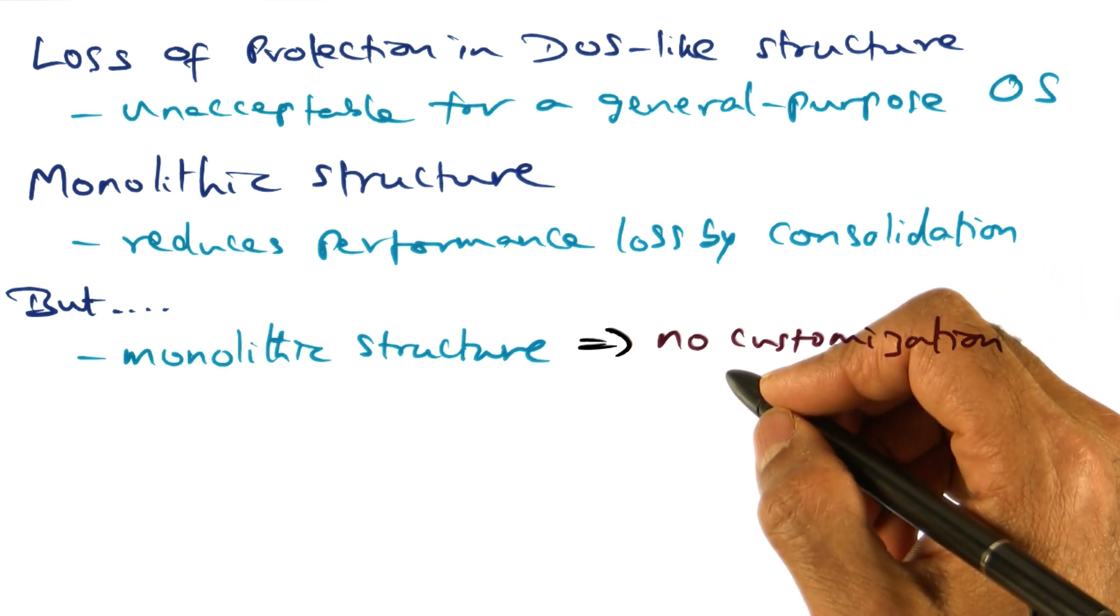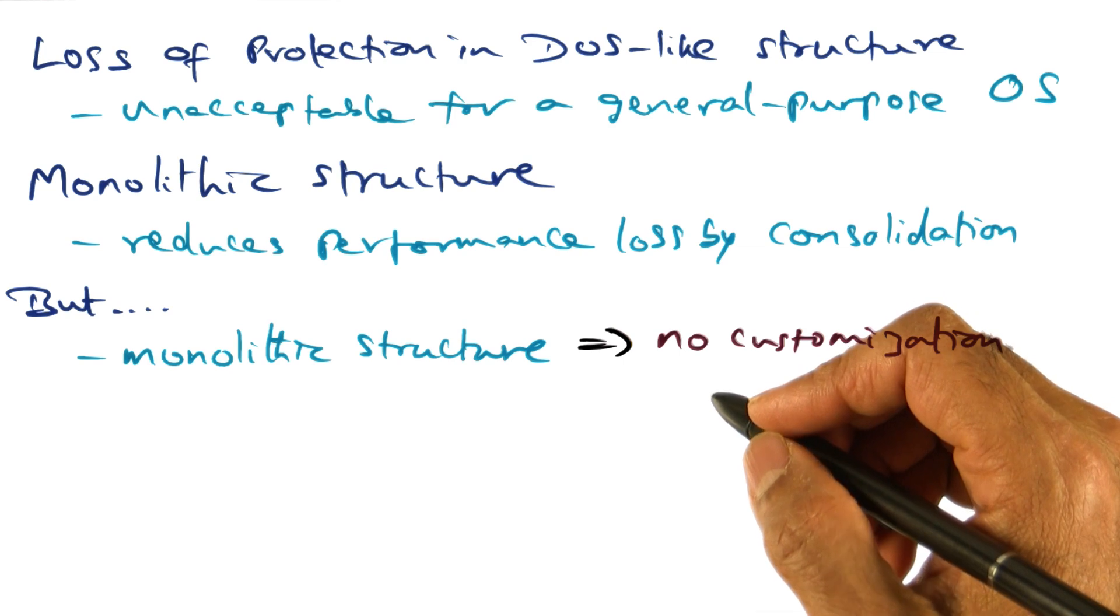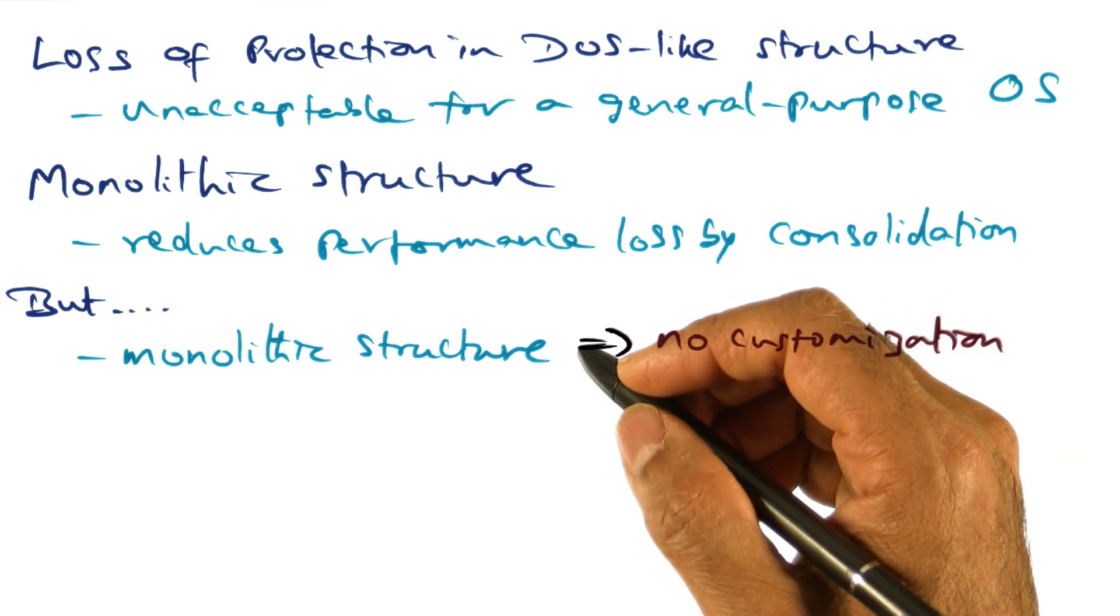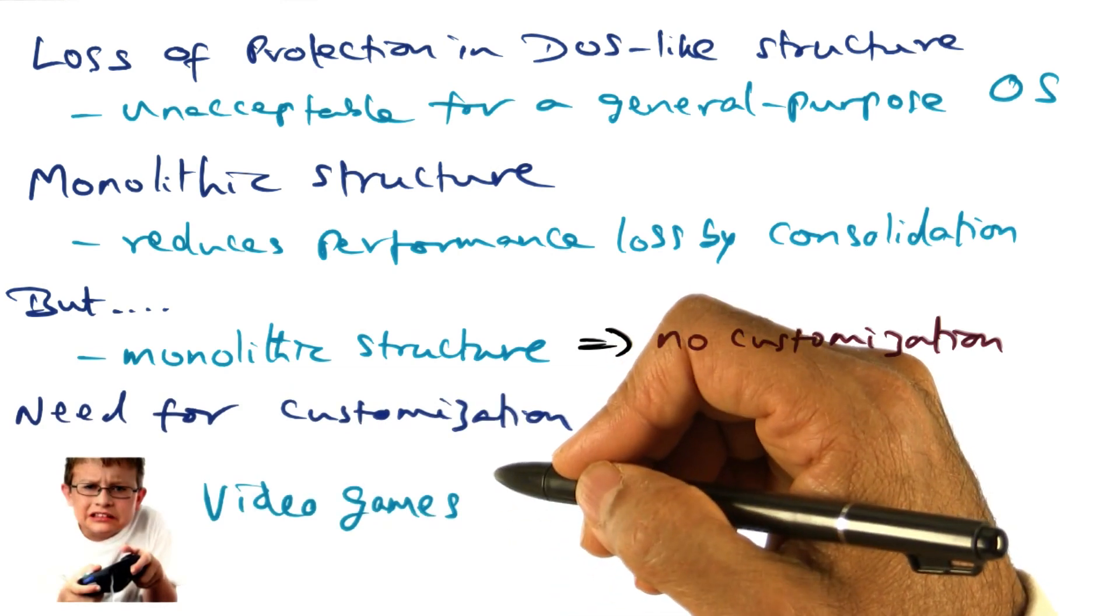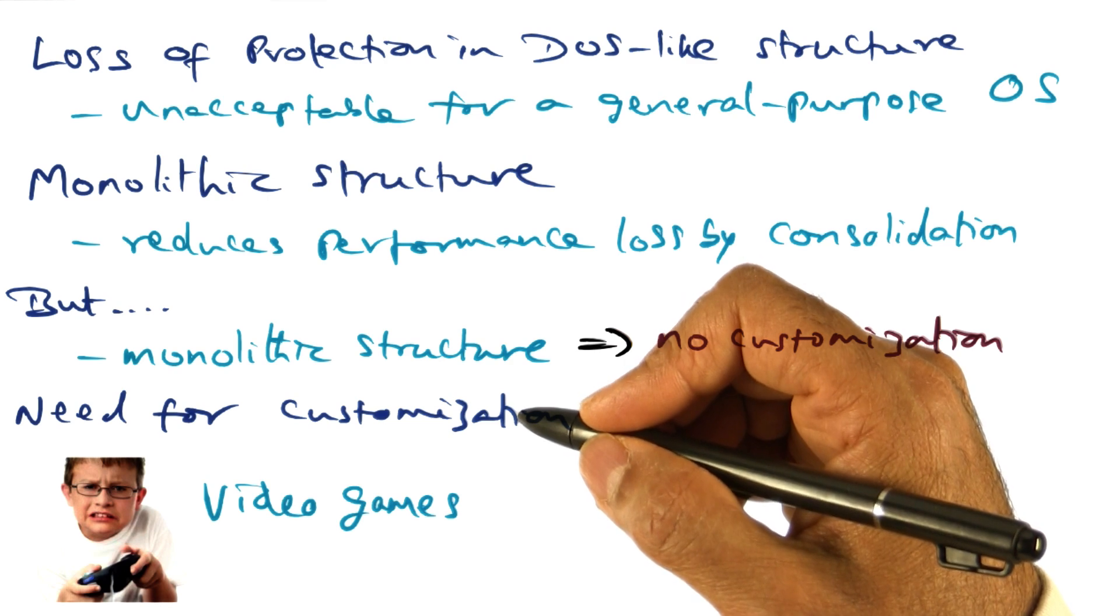Now, you may wonder, why do we need to customize the operating system service for different applications? Why not one-size-fits-all? Why is there an issue? If you look at a couple of examples, the need for customization will become fairly obvious.